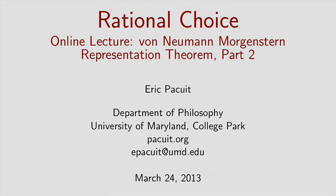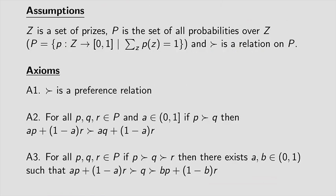This is Part 2 of the von Neumann proof of the von Neumann-Morgenstern Representation Theorem. This will be a short proof of one lemma we will need. To remind you: z is a finite set of prizes, p is the set of all lotteries or probabilities over z, and we have a preference relation — the agent's preference relation. The three axioms we assume: A1 is that this binary relation on p satisfies the requisite properties of a preference relation. We have the independence assumption A2, and A3 is the Archimedean property or continuity assumption.